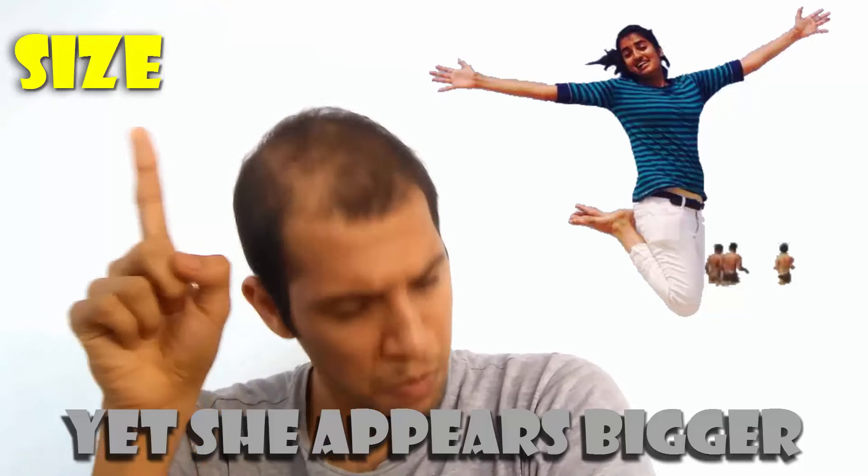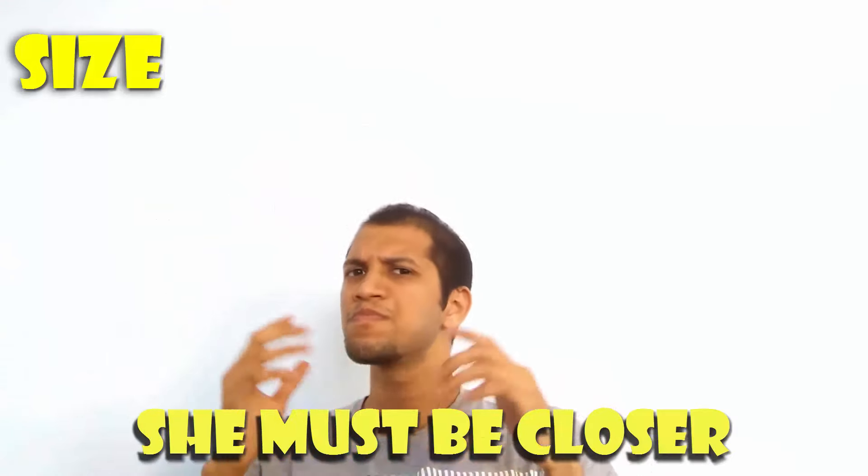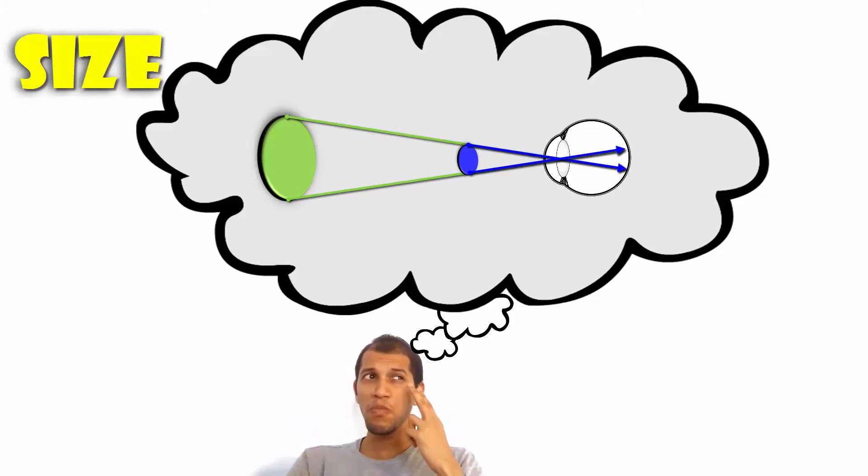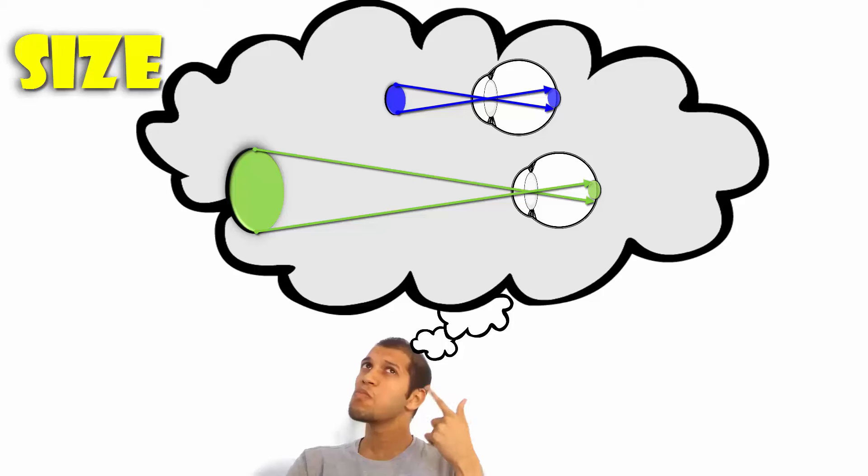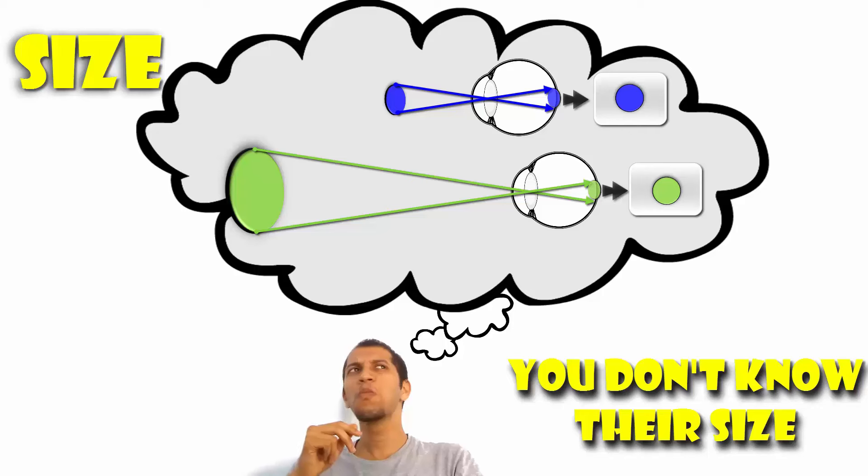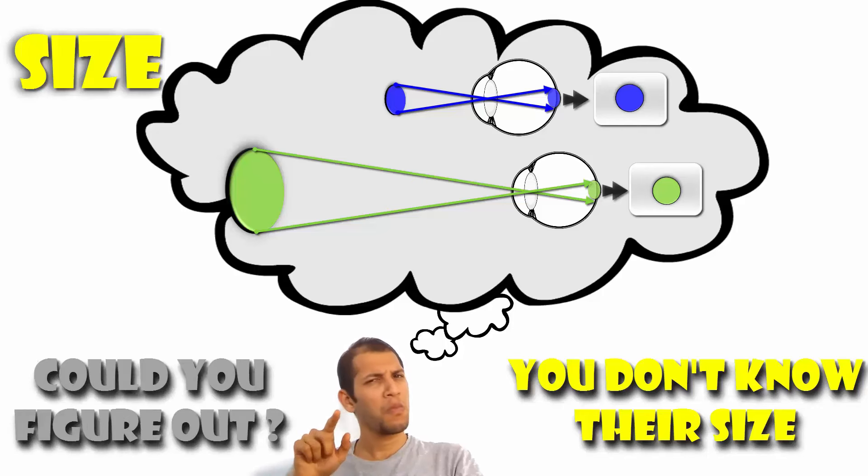But what if we had two objects, one closer and small, another bigger and far, such that they made the same angle, creating the same image size in your retina, and you had never seen them up close personally ever before. So, you had no clue about how big they actually were. Do you think your brain could figure it out, which one is closer?